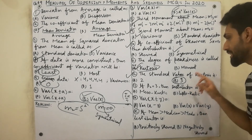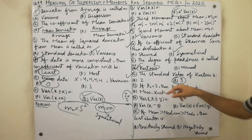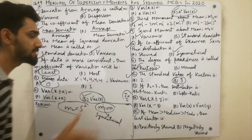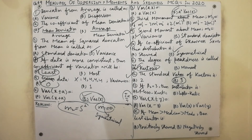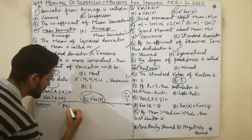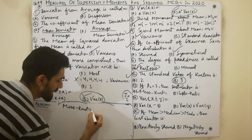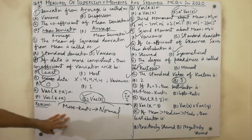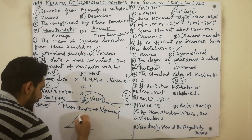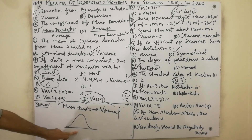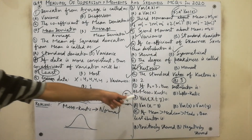MCQ thirteen: if beta-2 equals 3, the distribution is mesokurtic. Must remember that mesokurtic can also be called normal distribution. Both mesokurtic shape and normal distribution have a bell shape. So if beta-2 equals 3, the distribution is mesokurtic, or equivalently, normal.